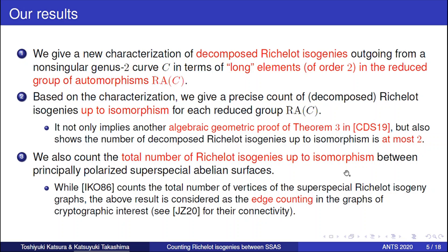Combining with the classical IKO result, we also count the total number of Richelot isogenies up to isomorphism. While they count the total number of vertices of the super-special Richelot isogeny graphs, our result is considered as the edge counting in such cryptographically interesting graphs. We note that very recently Jordan and Zaytman proved the connectivity of such graphs.